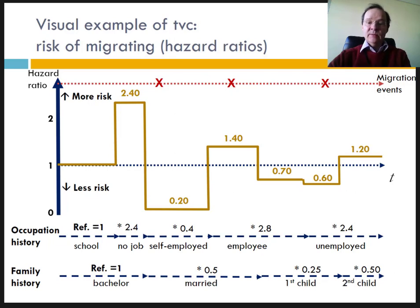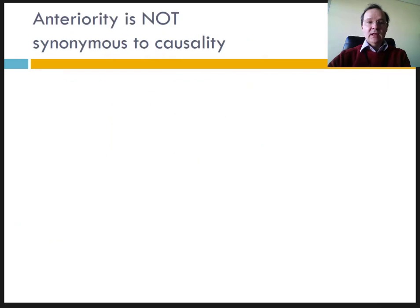Since time-dependent variables capture events that themselves have occurred in response to other events, taking these variables into account allows for better consideration of biographical dynamics and the order of events during life. However, time-dependent variables should not make us forget that the precedence of one event over another is not synonymous with causality. Anteriority is a necessary condition but not sufficient to prove causality.